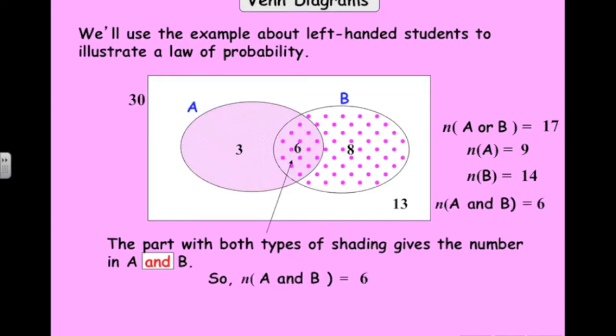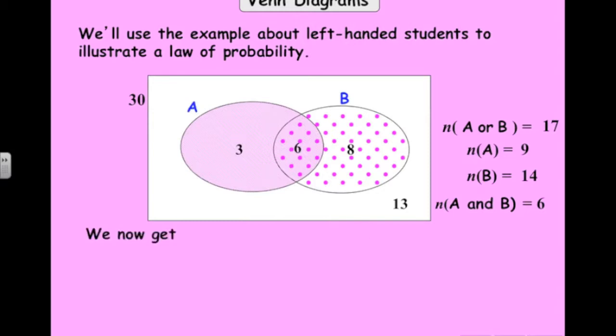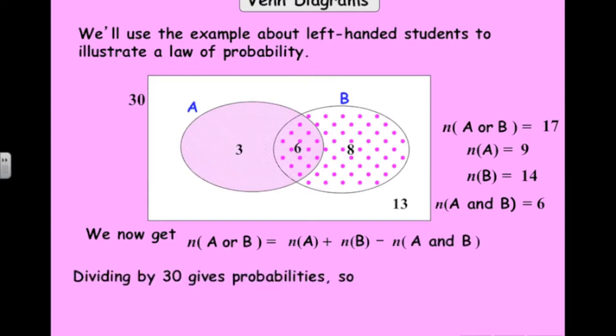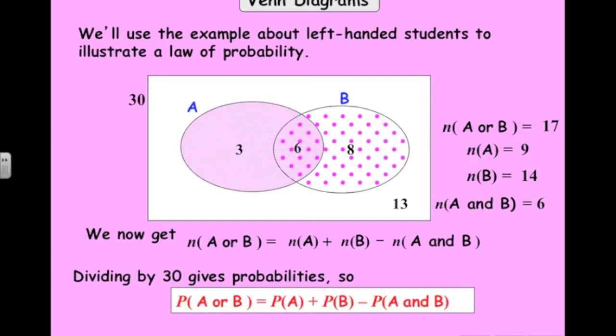So another way of getting the probability or the number in A or B is adding up all the elements in A, adding up all the elements in B and subtracting the elements in A intersection B. You can see that I've counted that 6 part, the 6 people who, in our example, were left-handed boys. I've counted them twice. So I have to subtract it off. So that's where we get that red formula there, which is an important formula that I showed you earlier in probability.